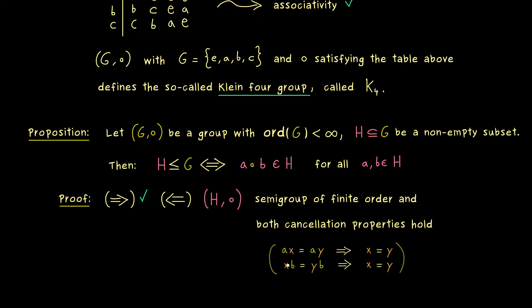As a reminder, in a group we always have that we can cancel an element from the left-hand side or from the right-hand side. Therefore, we definitely have these two implications here inside the group G. But now we can simply choose A, X, Y, and B from the set H.